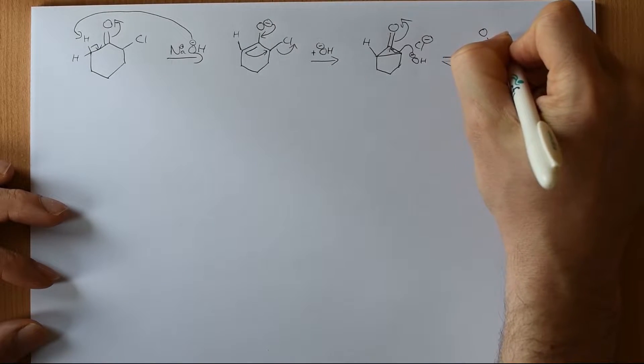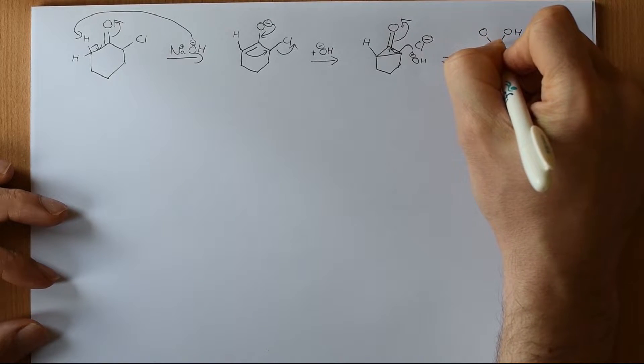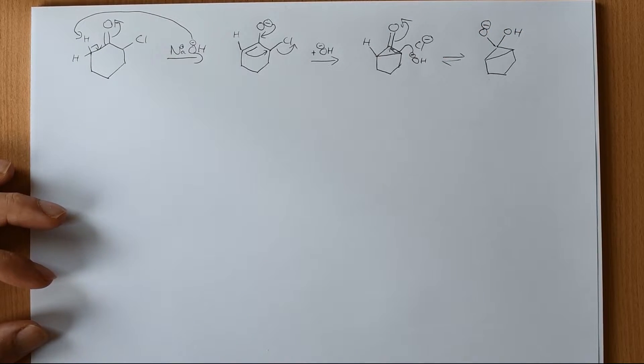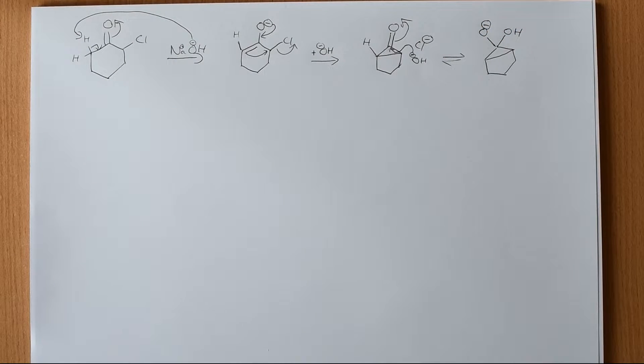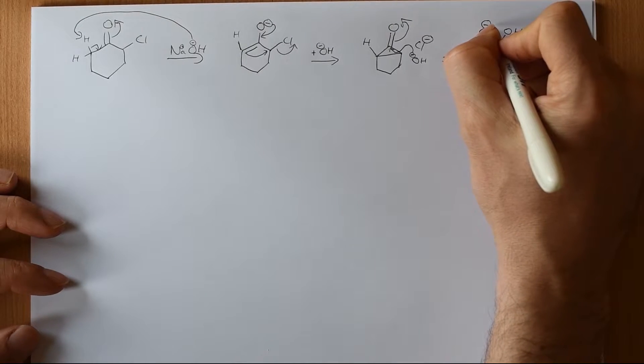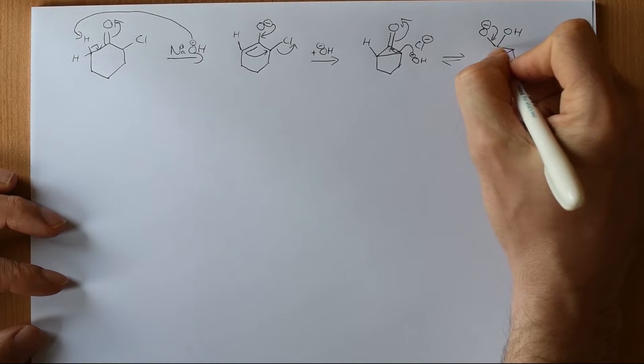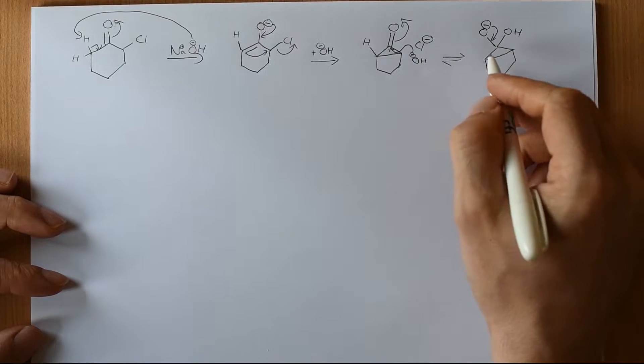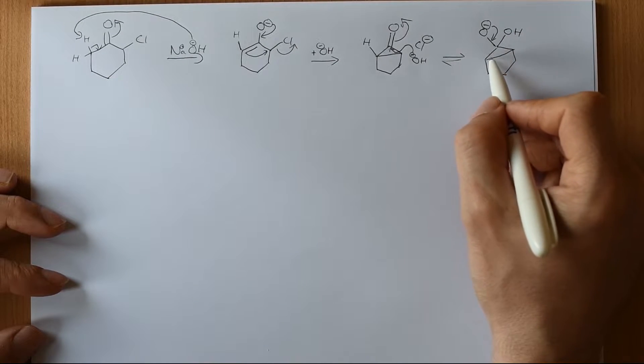And now our hydroxide is going to attack the carbonyl and make a tetrahedral intermediate. So the hydroxide attacks, this double bond breaks and oxygen gets a pair of electrons all to itself, hence the negative charge. This doesn't hang around for a great deal of time and it's going to reform the carbon-oxygen double bond and it's going to break one of these two bonds.